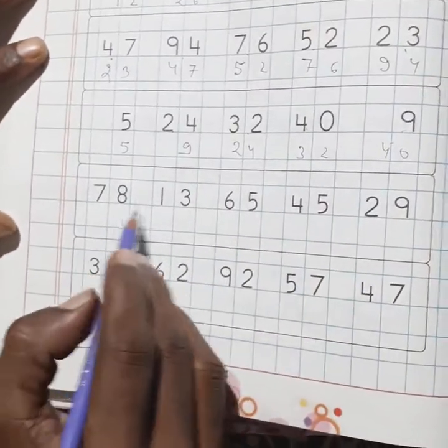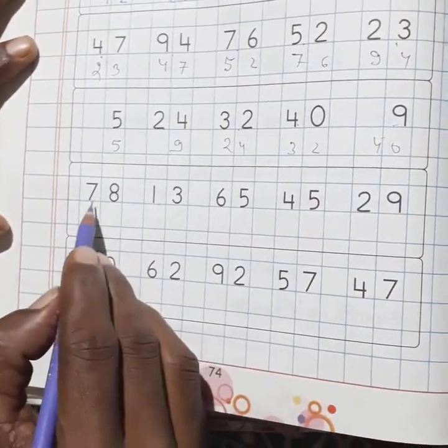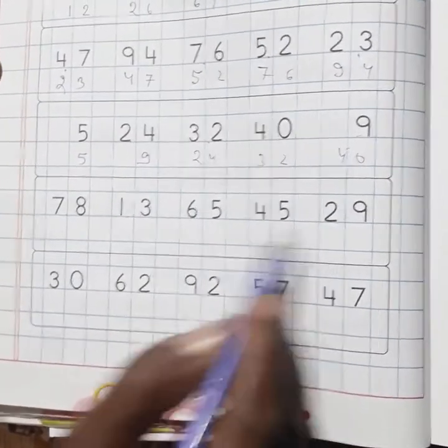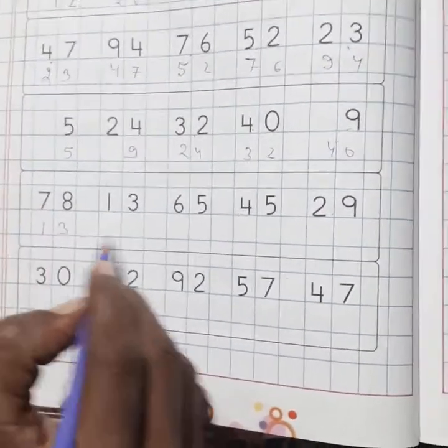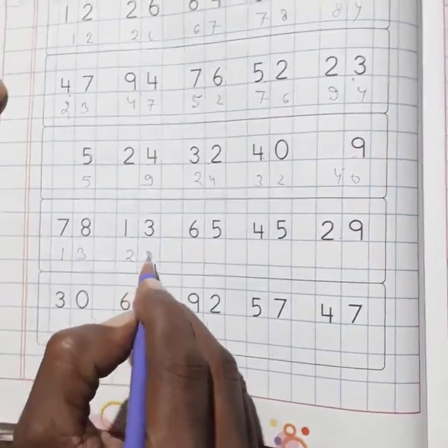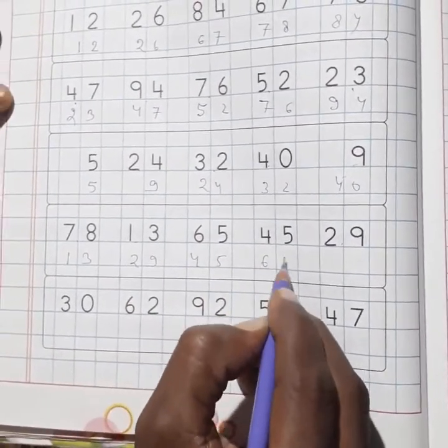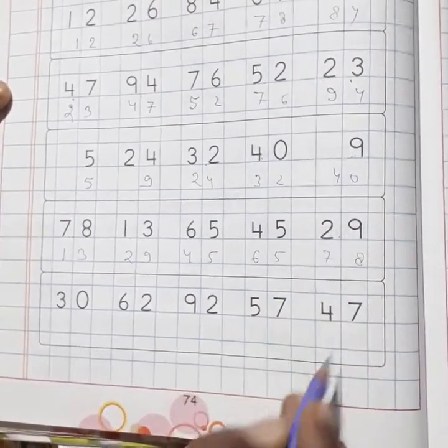Next, here 78, 13, 65, 45, and 29. Now the least number is 13, then 29, then 45, then 65, and the last 78.